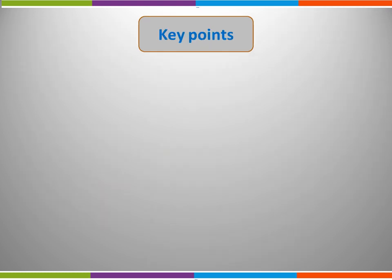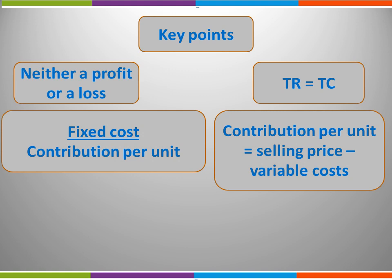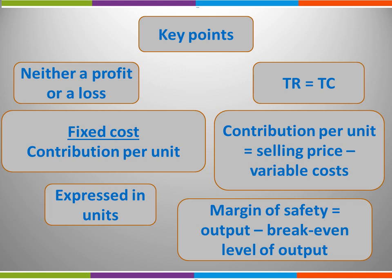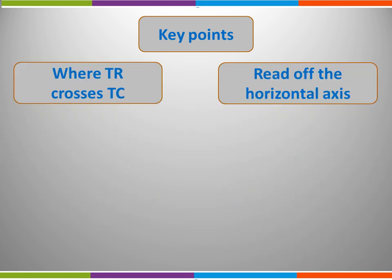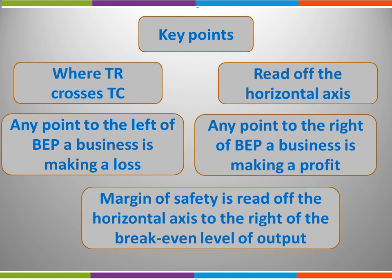So, the key points covered in this video: the breakeven point is where a business is neither making a profit nor a loss — total revenue equals total cost. Calculate it using fixed costs divided by contribution per unit, where contribution per unit equals selling price minus variable costs. Always express the breakeven level of output in units. The margin of safety is calculated as actual output minus the breakeven level of output. On a breakeven chart, the breakeven point is where total revenue crosses total cost; read the output off the horizontal axis. To the left of breakeven a business makes a loss; to the right it makes a profit. The margin of safety is read from the horizontal axis to the right of the breakeven point.